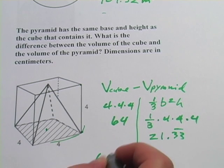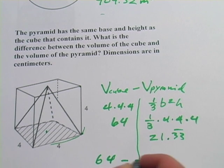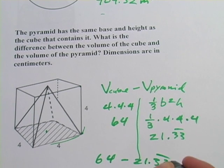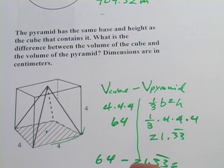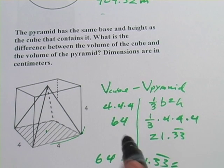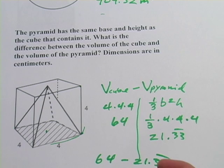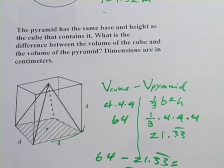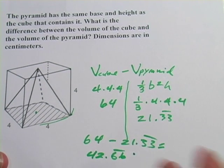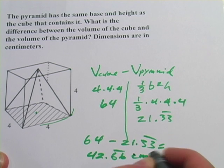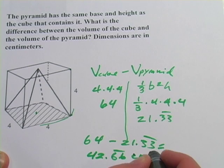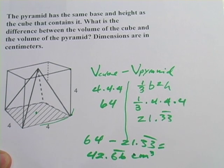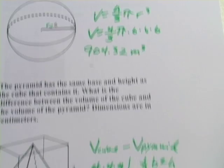Now for the subtraction: 64 minus 21.3 repeating gives 42.6 repeating. The dimensions were in centimeters, so these are cubic centimeters, because volume is always cubed.